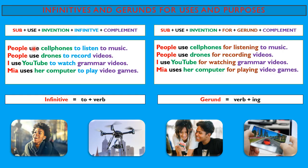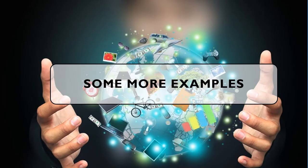If you notice, the sentences are the same. People use cell phones to listen to music. People use cell phones for listening to music. The idea is the same — we express the same thing in two different forms. Here the idea is expressed using the infinitive, which is 'to' plus the verb. And here the idea is expressed using the gerund, which is the verb plus -ing. The meaning is the same in two different ways.